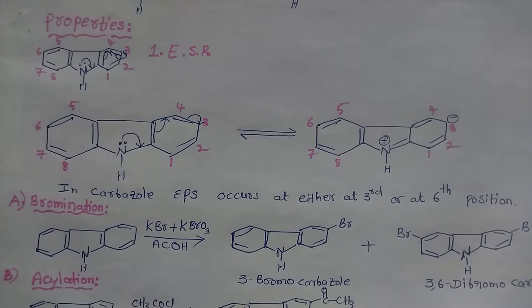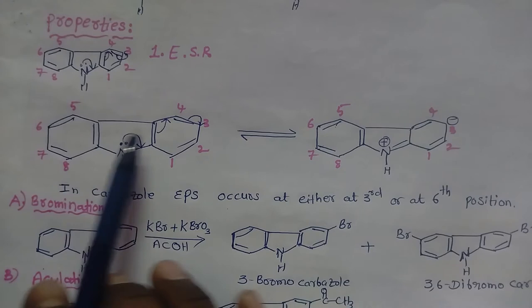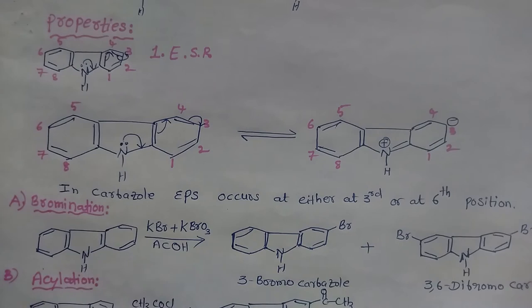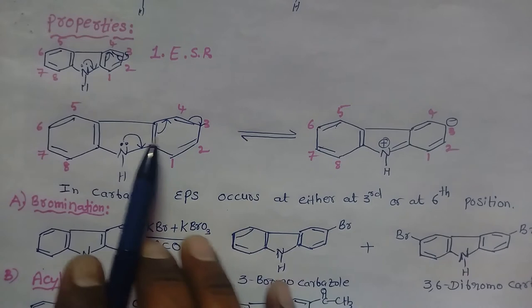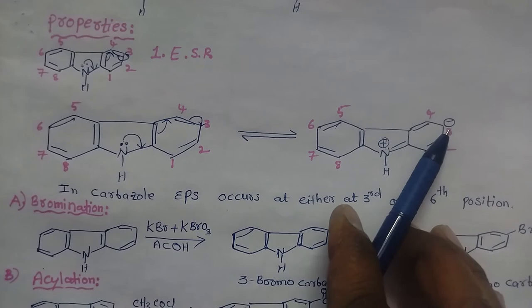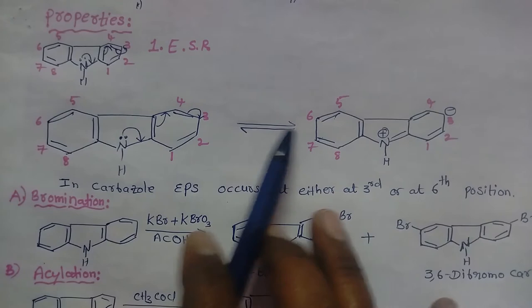Now we go through the chemical properties of carbazole. Carbazole is an aromatic compound, and aromatic compounds undergo electrophilic substitution reactions. In carbazole, the pyrrole ring is surrounded by two benzene rings on both sides, so there is no chance for the electrophile to attack the pyrrole ring. The resonance structures tell us that electrophilic substitution takes place at the 3rd or 6th position, which are equivalent positions.